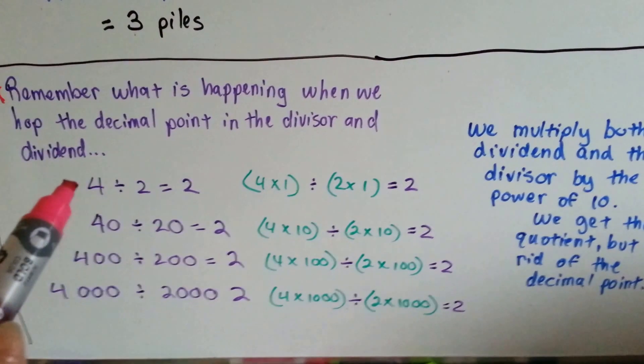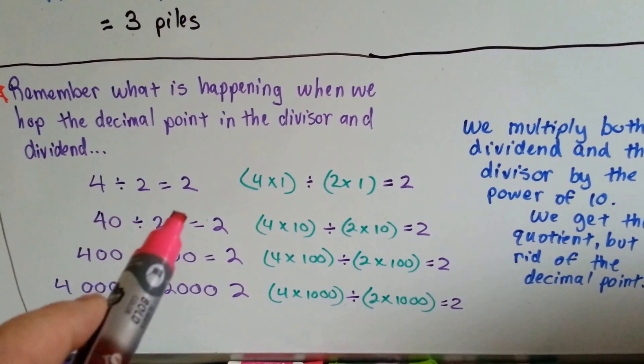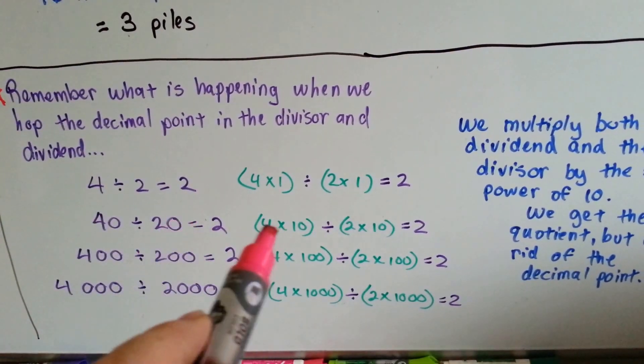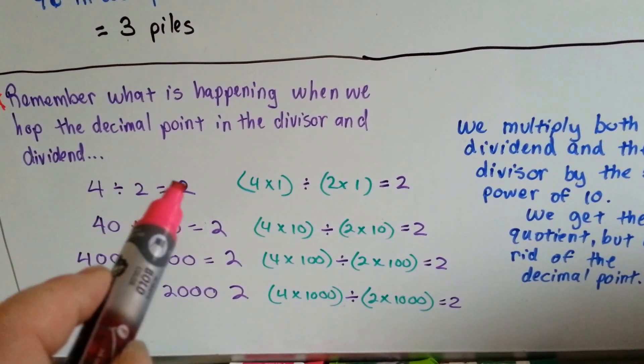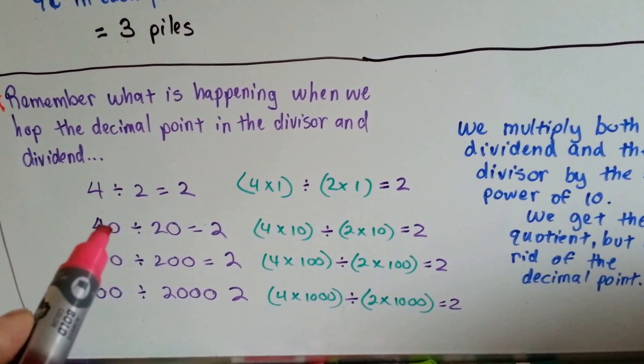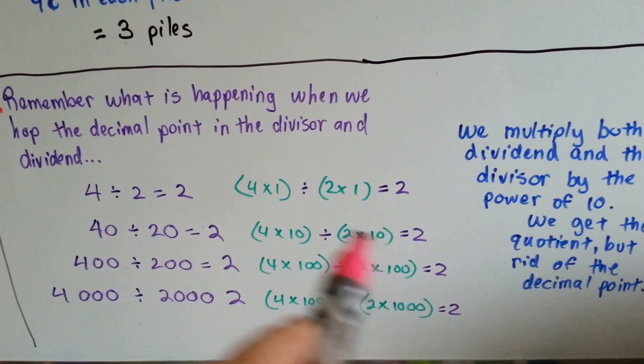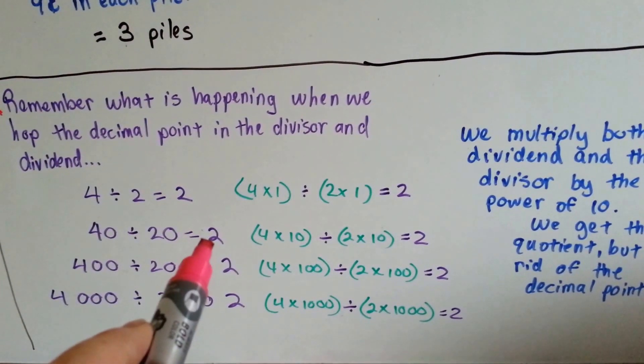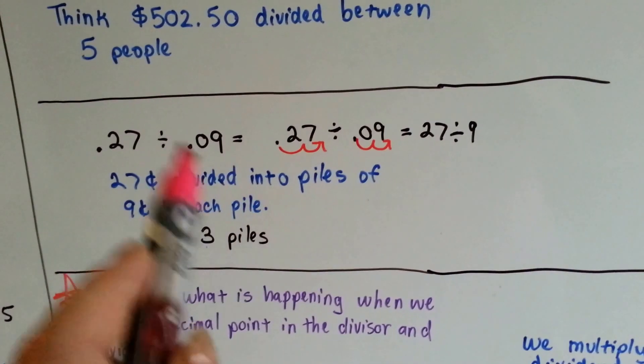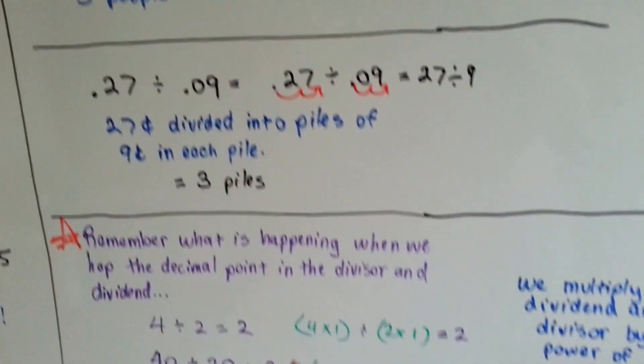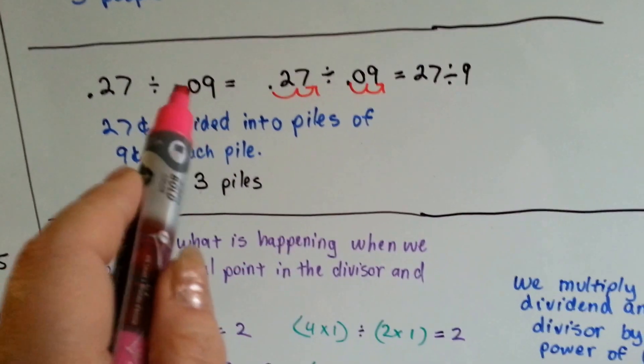Whenever we multiply the dividend and divisor by a power of 10: 4 divided by 2 is 2. If we multiply the 4 and the 2 by the power of one 10 each, it's not going to change the divisor. That's why we can do this. It's not going to change the quotient. It's not going to change the answer.